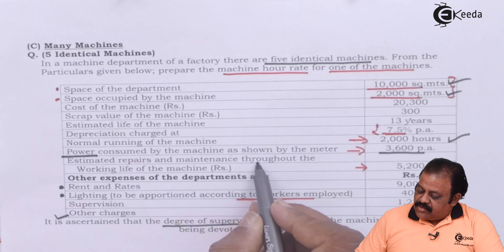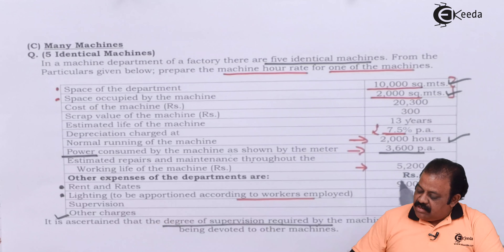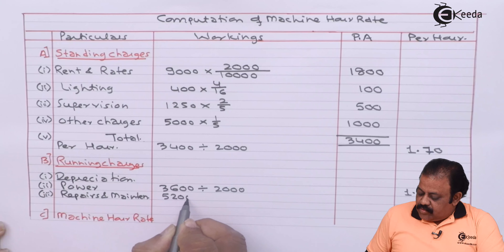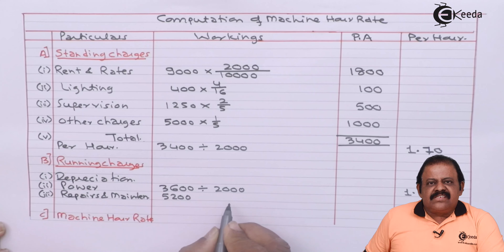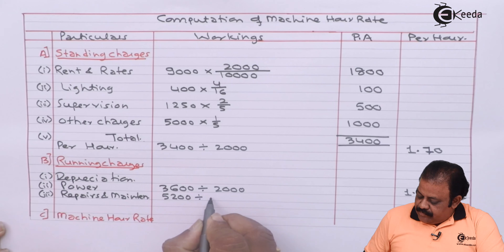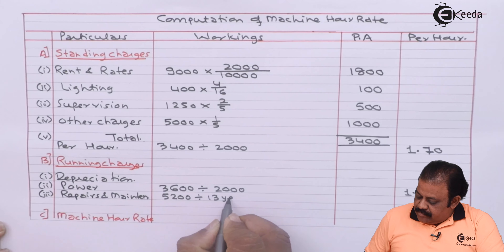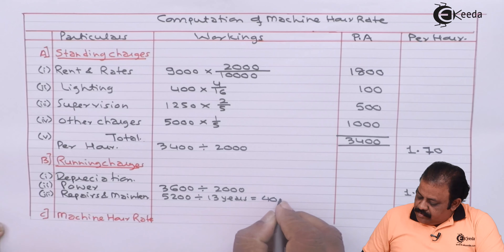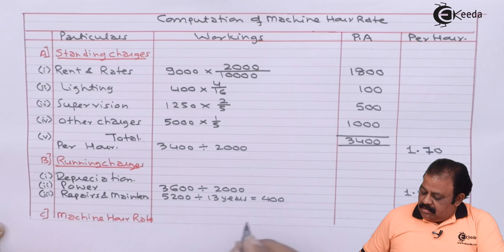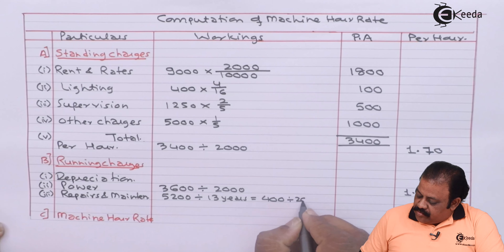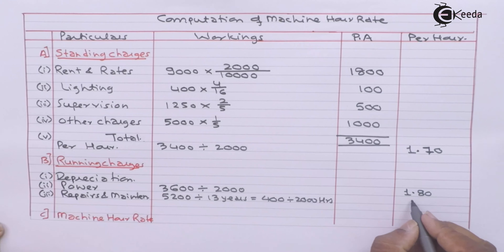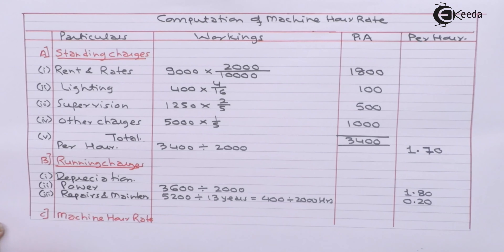Estimated repairs and maintenance throughout the working life of the machine is Rs. 5,200. Working life is 13 years, so that gives Rs. 400 per year. Divided by 2,000 hours, the repairs and maintenance per hour is Rs. 0.20.